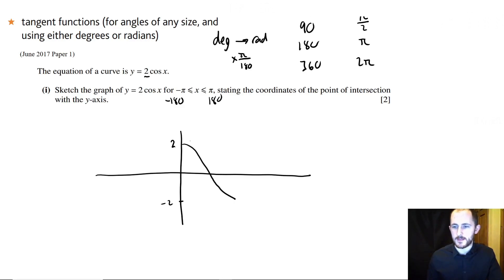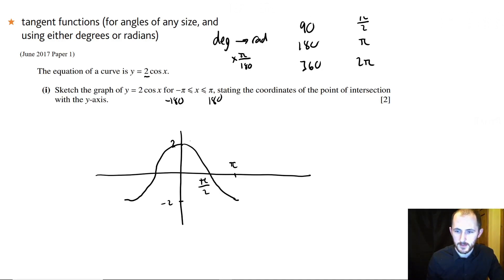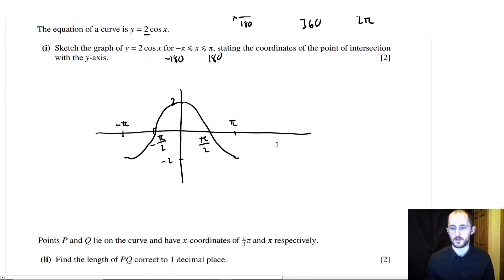This happens at 0, then at π over 2 it goes through 0, and then at π it reaches the minimum. On the other side it's going to be just a complete reflection, going down and along. This would be at negative π over 2 and this side here will be minus π. That's all you really need to do for that question — quick two marks, not too bad.